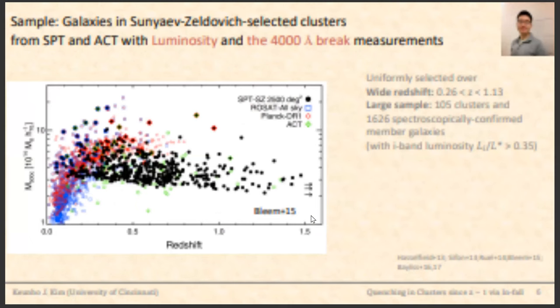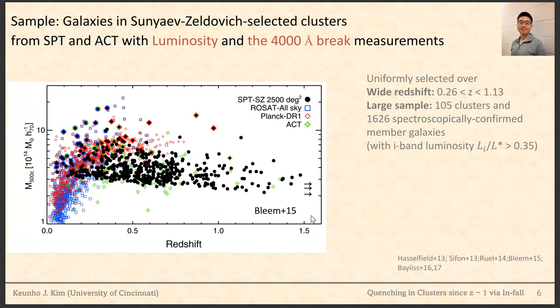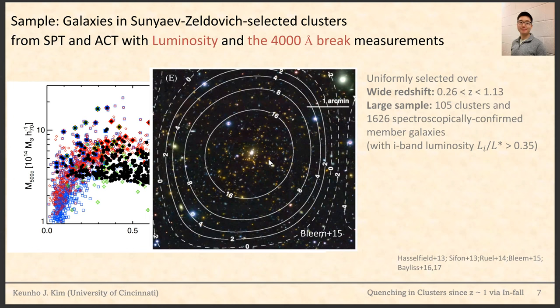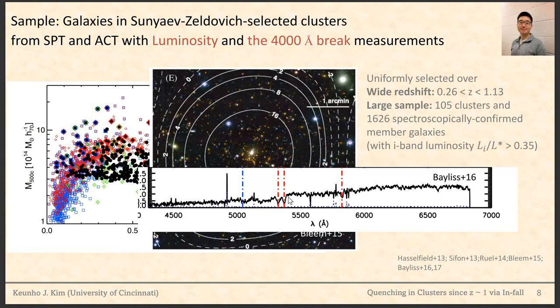We selected one of the largest galaxy cluster samples at high redshift, covering a wide range of redshift from 0.26 to 1.1. We obtained these sample clusters from the SPT and ACT cluster surveys. The black dots are our sample clusters with their mass distribution along the Y-axis. From optical photometric follow-ups, we obtained individual galaxy i-band luminosity, which we use as a proxy for stellar mass. From spectroscopic follow-up, we measured the accurate cluster membership, the peculiar motion of infalling galaxies, and the age-sensitive 4000 Å break index strength.